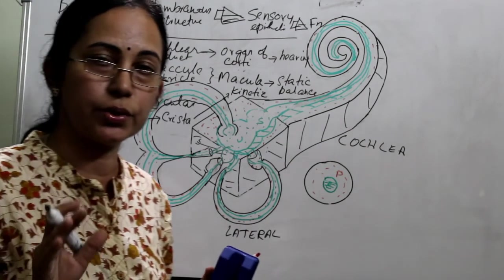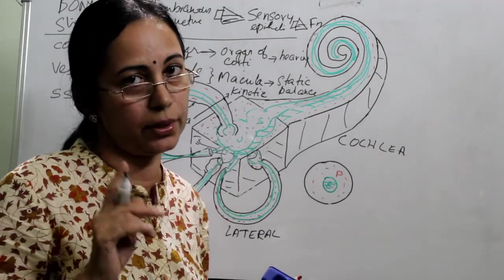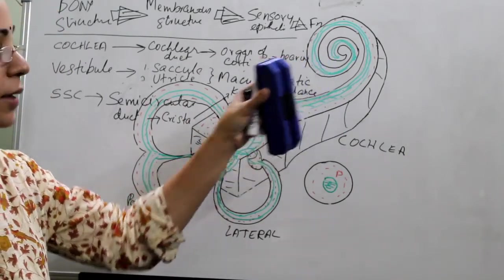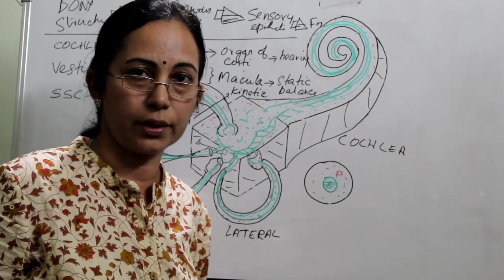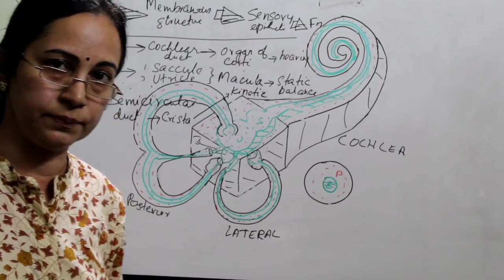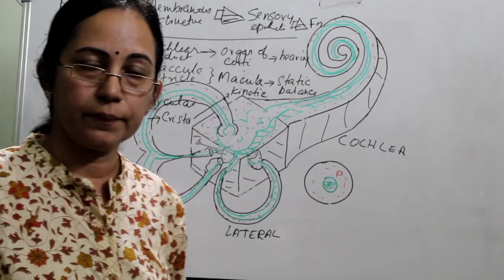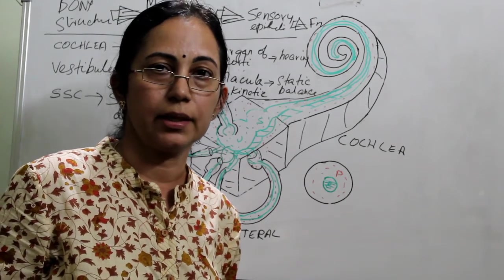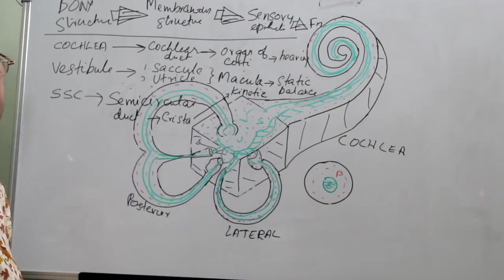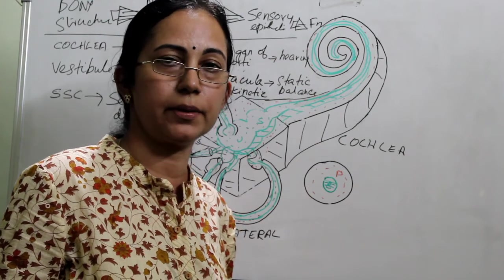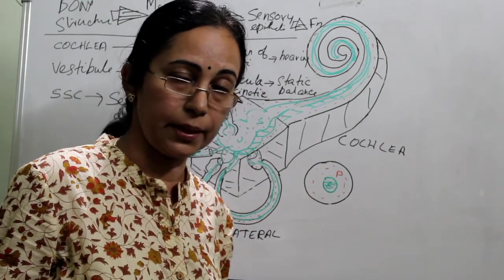This concept you should have a very clear understanding of. The cochlea contains the cochlear duct and the organ of Corti. The vestibule contains the saccule and the utricle with the macula. The semicircular canal has the semicircular duct containing the ampulla with the crista. Between the bony and membranous labyrinth is the perilymph, and inside the membranous labyrinth is the endolymph.